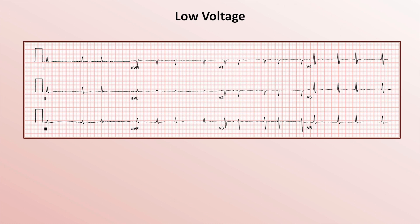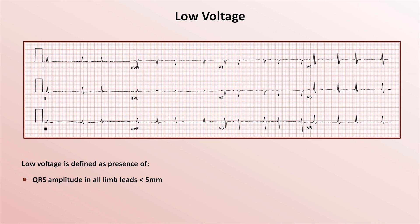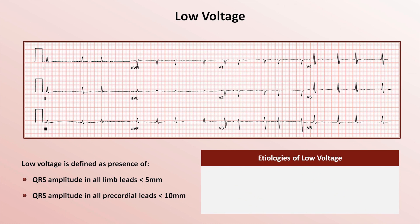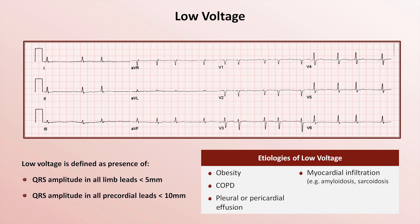There are two last abnormalities to discuss in this video, and these typically affect all waveforms. The first is low voltage. The presence of low voltage is defined as a QRS amplitude in all limb leads of under 5 mm and/or in all precordial leads of under 10 mm. Low voltage is the consequence of some insulating substance coming between the electrodes on the chest wall and the conduction system. Therefore, etiologies include obesity, COPD — in which the hyperinflated lungs act as insulation — a pleural or pericardial effusion, myocardial infiltration, and hypothyroidism. In hypothyroidism, proposed explanations include occult pericardial effusion and/or occult ascites, and soft tissue edema of the chest wall, among others.